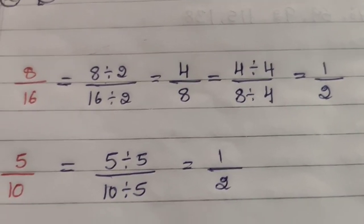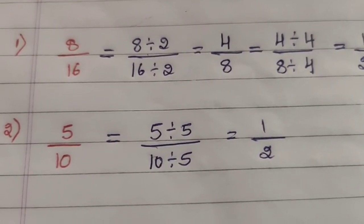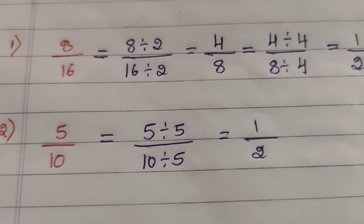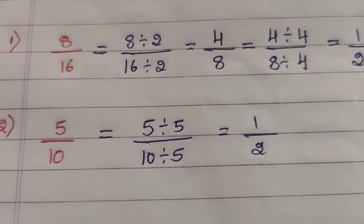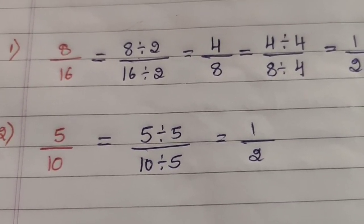Question 2 — 5/10: divide by 5: (5÷5)/(10÷5) — 5 ones are 5, 5 twos are 10 — giving 1/2.